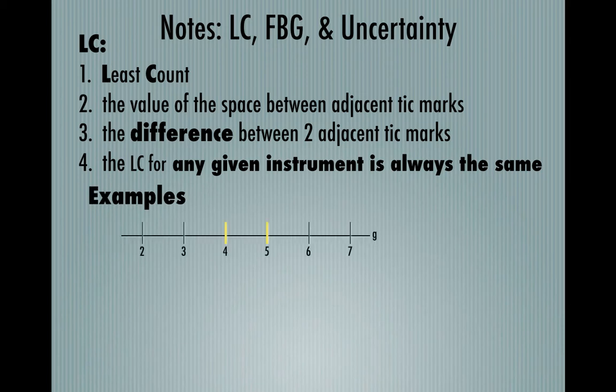Alright, so here's an example. Here is a scale. It's in grams. And you can see that the lines are numbered 2, 3, 4, 5. And so 4 and 5 are adjacent tick marks. If you subtract them, you get 1 gram, and so the Least Count of that scale is 1 gram. Pretty straightforward.